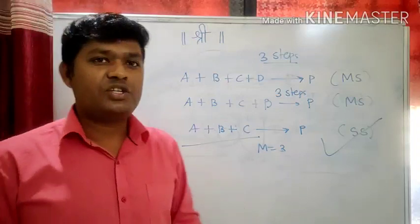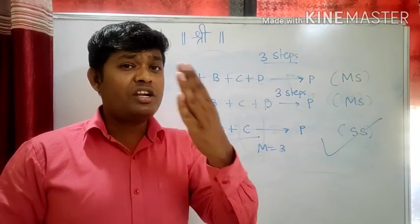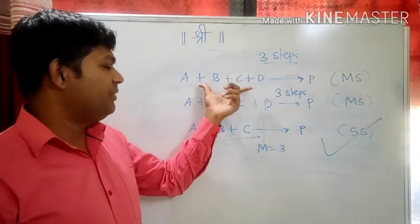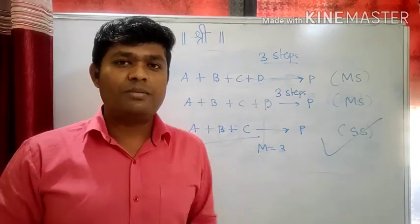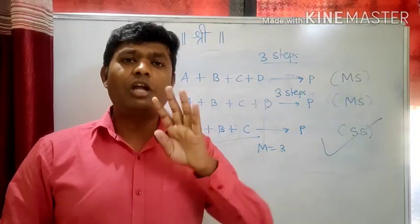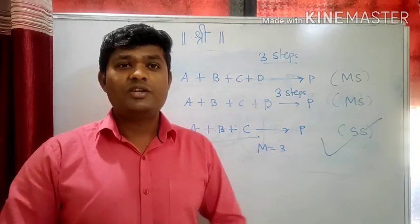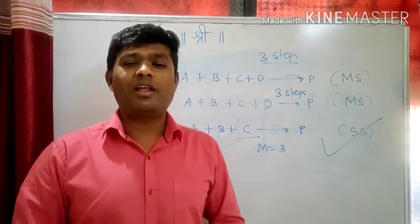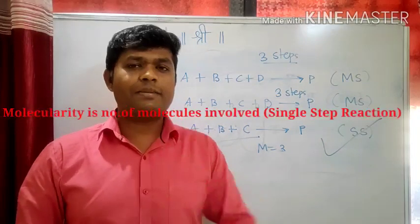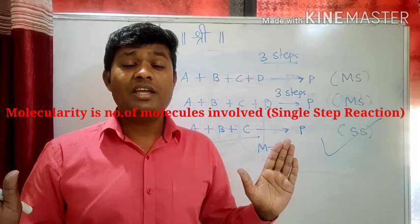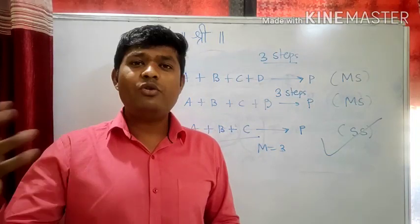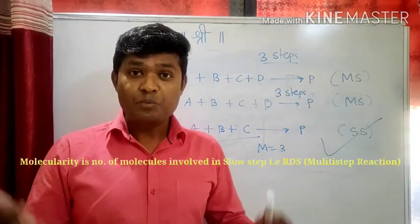So in reactions five and six, four molecules are involved overall but molecularity is not four. For that we have to see which is the slow step and how many molecules are involved in it. In reaction five, two molecules are involved in the slow step, so molecularity is two. In reaction six, three molecules are involved in the slow step, so molecularity is three. To predict molecularity, first know whether the reaction is single step or multi-step. For multi-step, guess the slow step first, and then count the molecules in it.